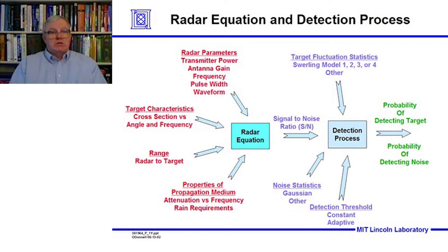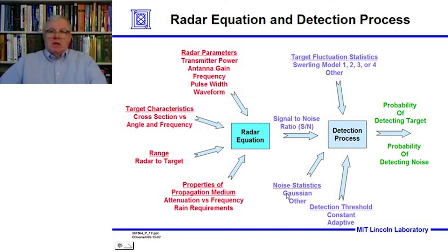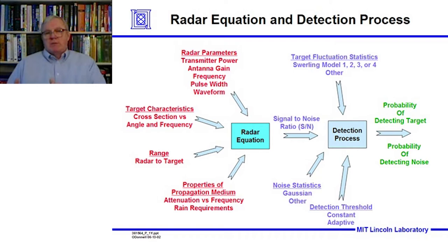Noise has statistical properties. For most microwave radars, the noise is Gaussian, but at certain frequencies — around 10 MHz — the noise can be non-Gaussian, requiring careful attention to noise statistics. Before continuing, a brief sidebar on the electromagnetic spectrum is useful.